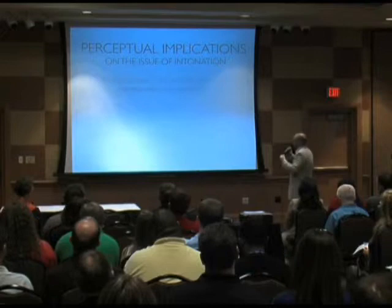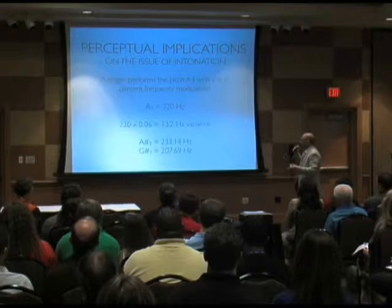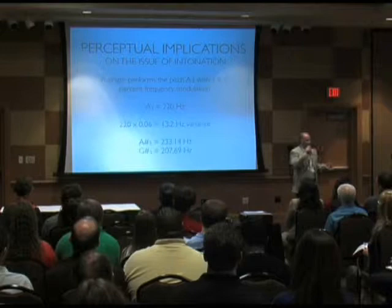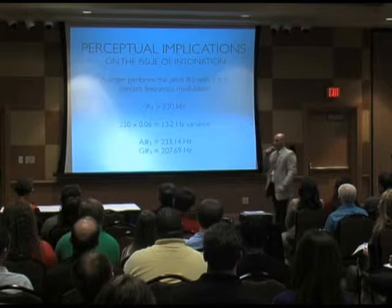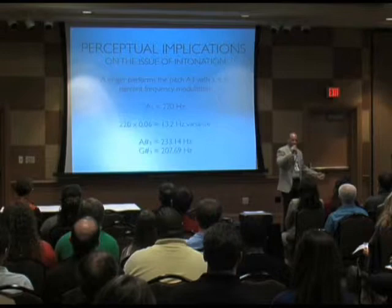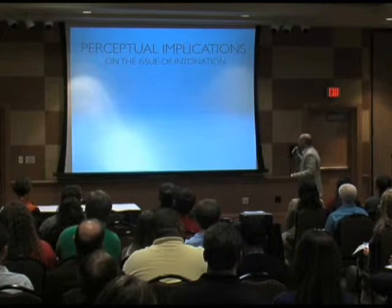The problem is this: if I'm singing A3 with a 6% frequency modulation, that 220 Hz is varying 13.2 up and 13.2 down. A-sharp is 233 and G-sharp is 207. So my undulation is cycling A3, A-sharp, A3, G-sharp, A, A-sharp, and back through. You can see the issue of intonation, particularly for us as choral conductors trying to fashion an intonation system when it's a moving target.